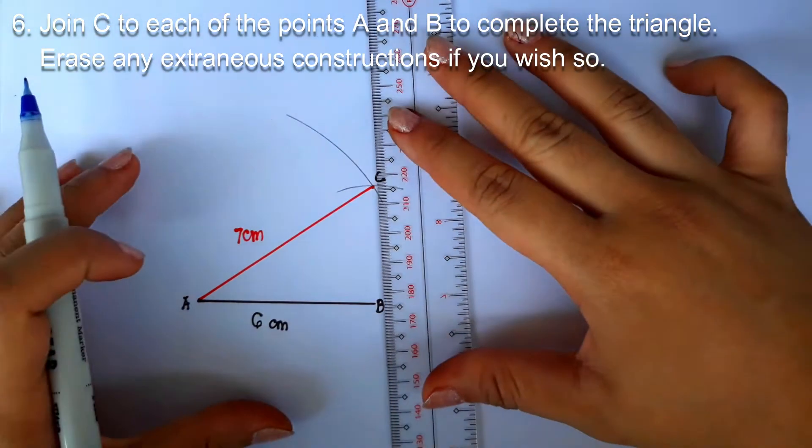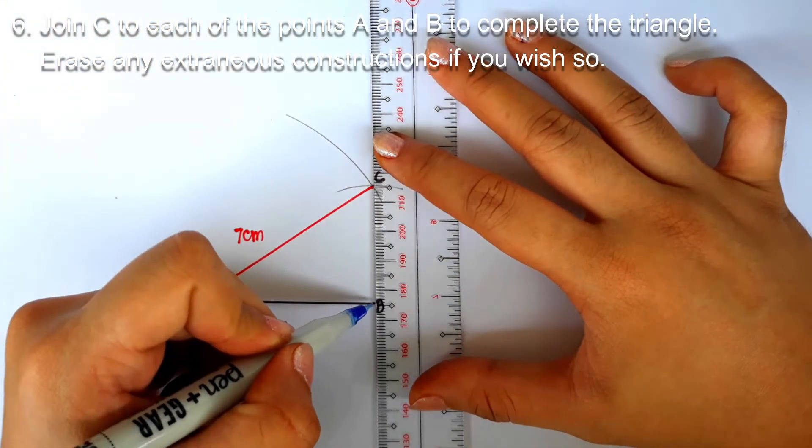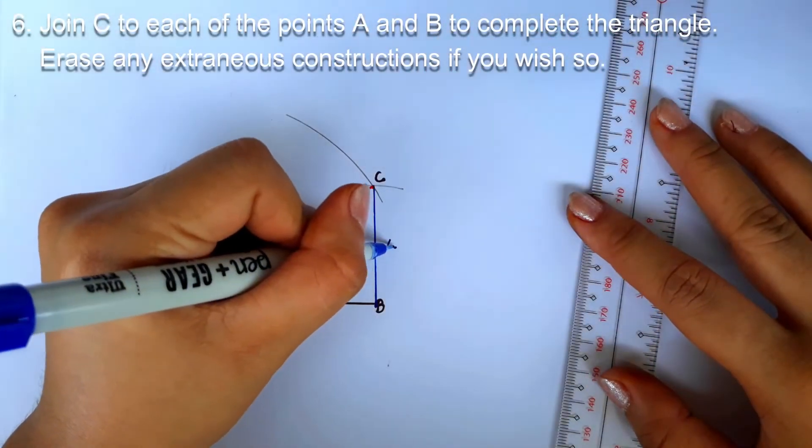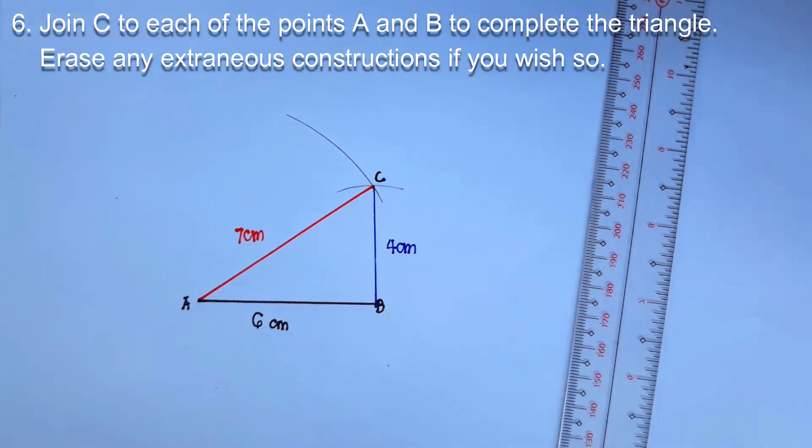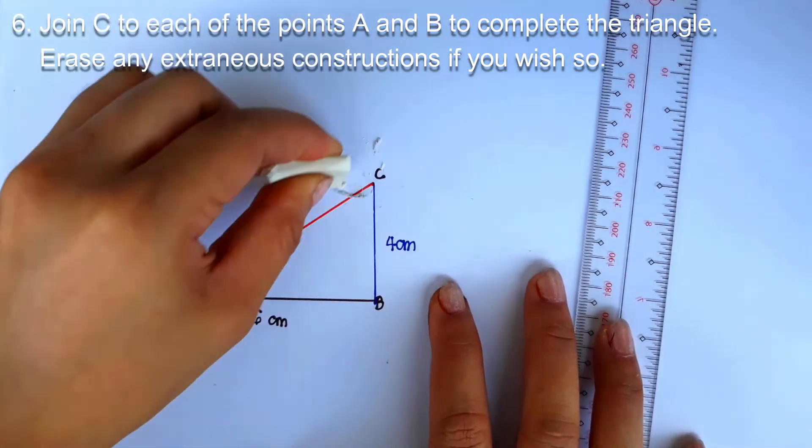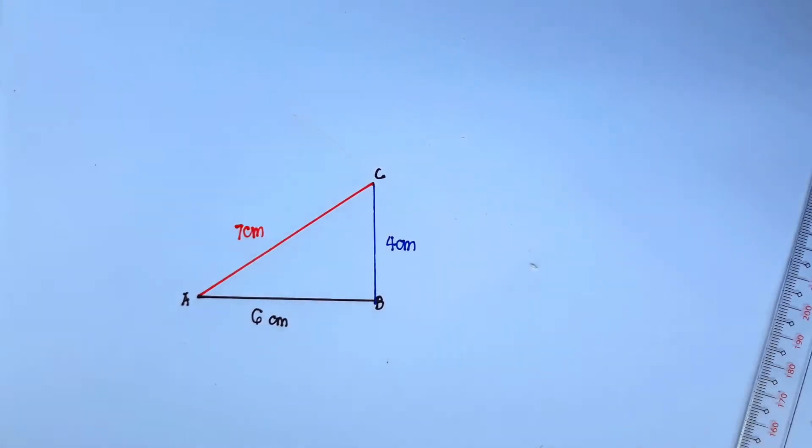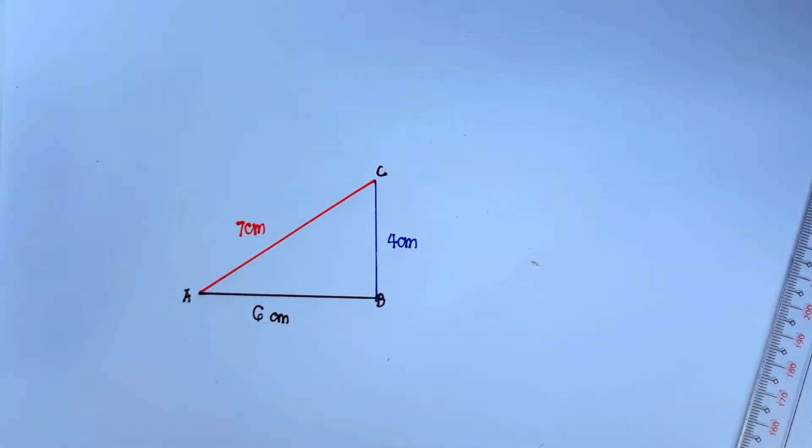Triangle ABC conforms to the specific dimensions. AB is equal to 6 centimeters, BC is equal to 4 centimeters, and CA is equal to 7 centimeters. Erase any extraneous constructions if you wish. And that's it. You constructed a triangle having side lengths 6 centimeters, 7 centimeters, and 4 centimeters.